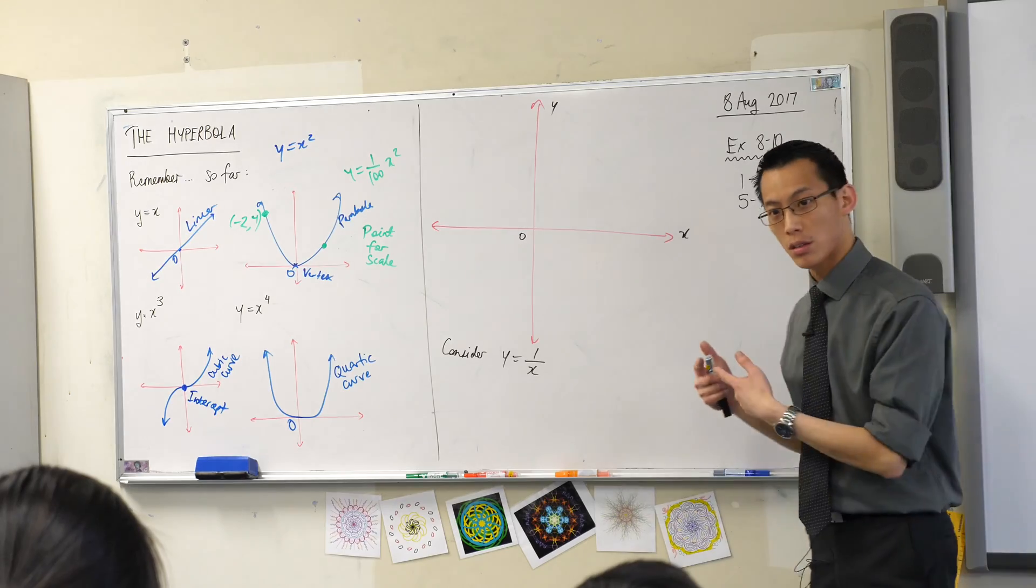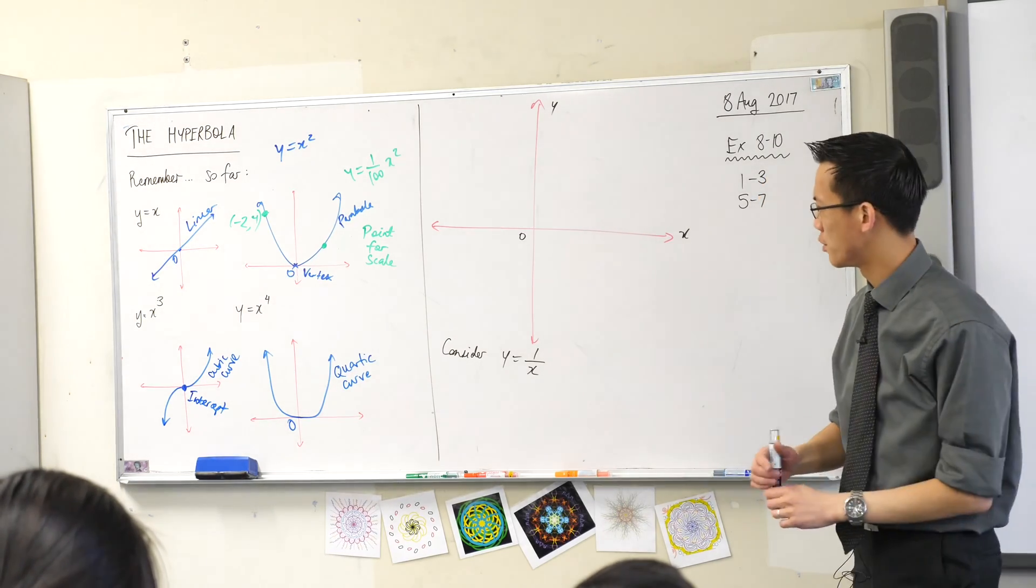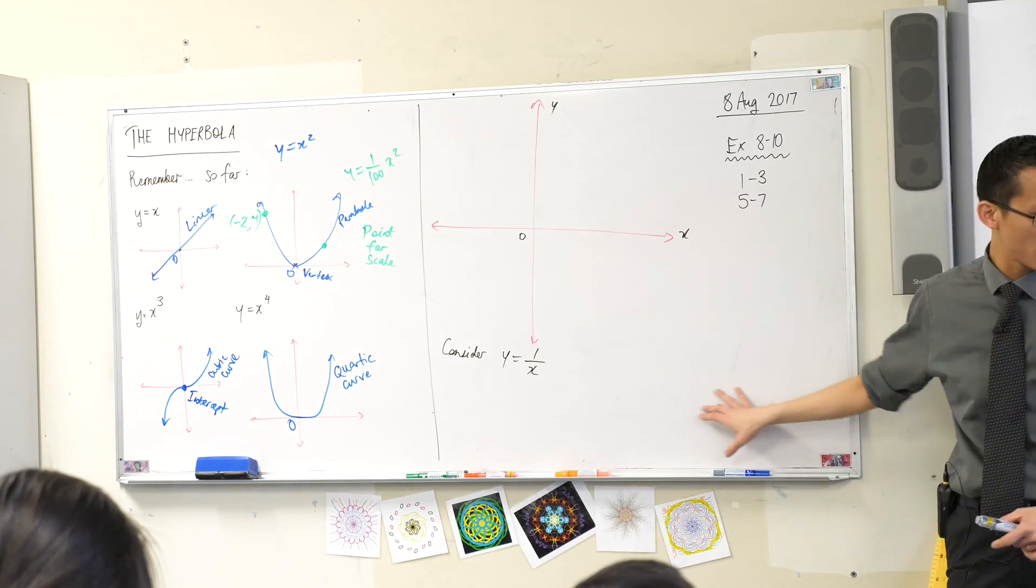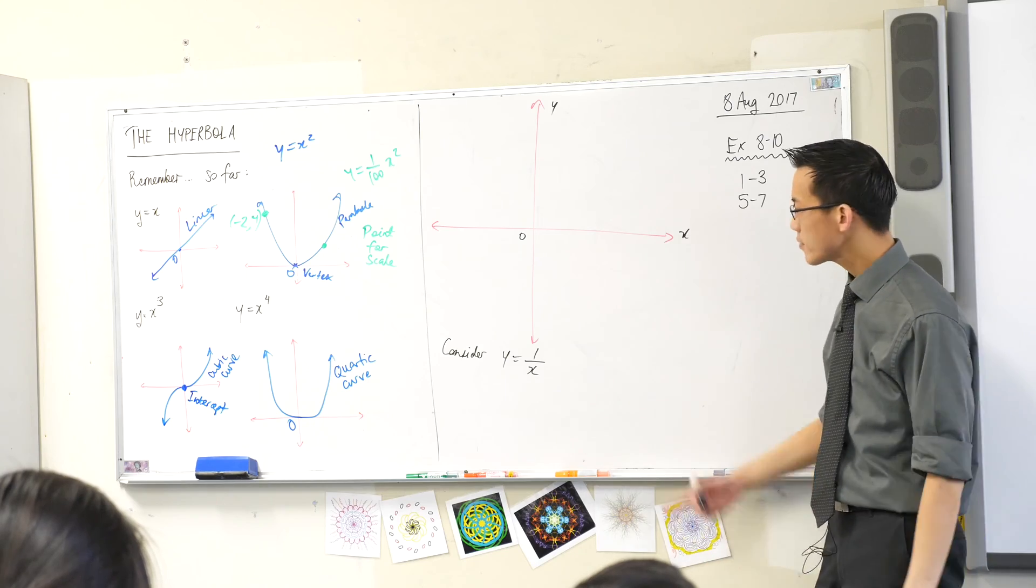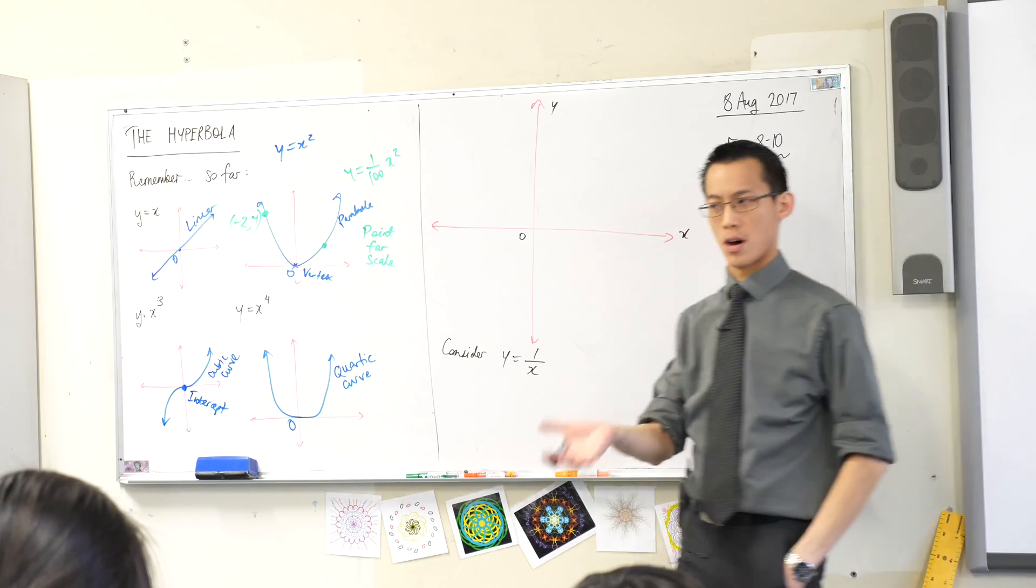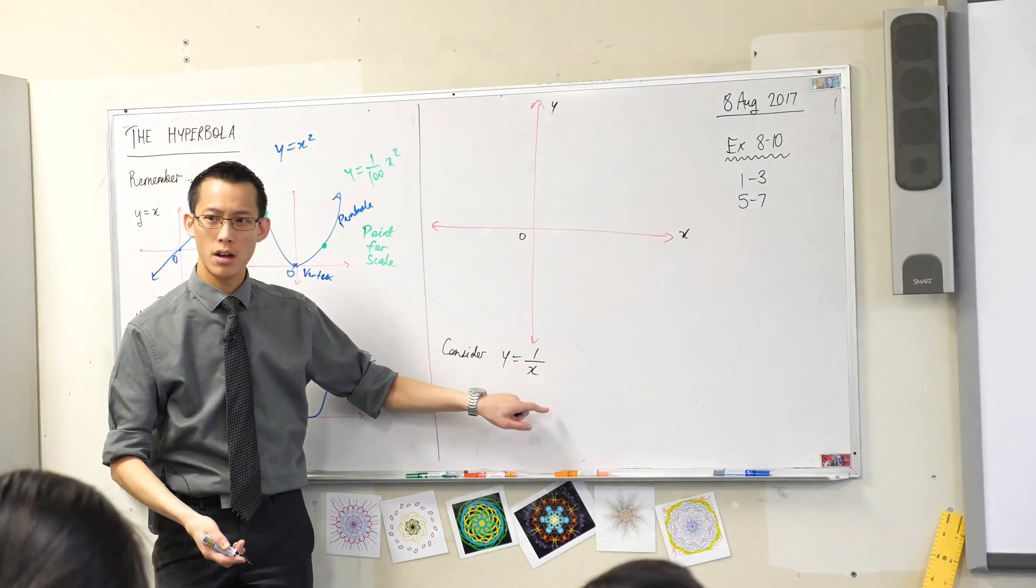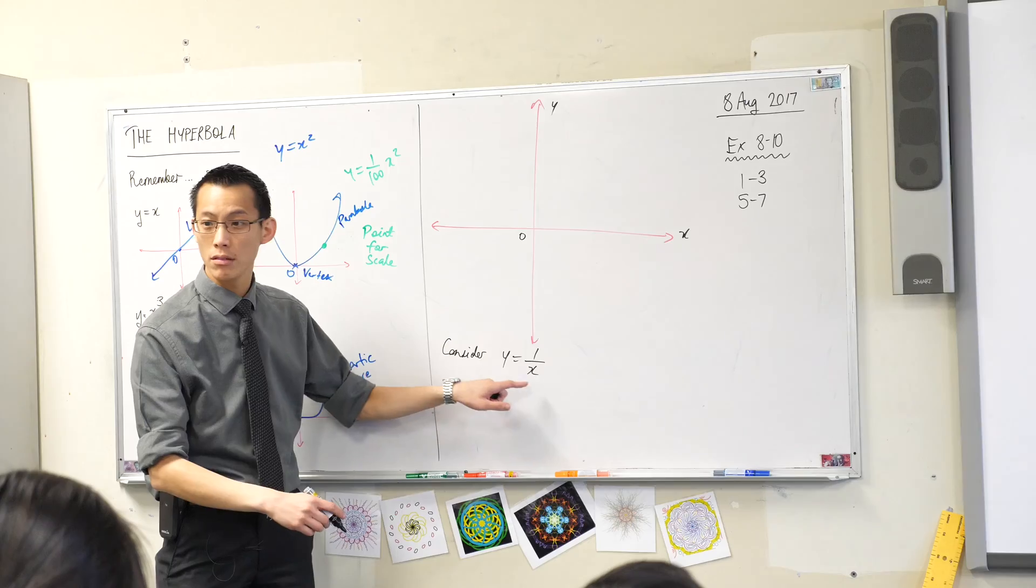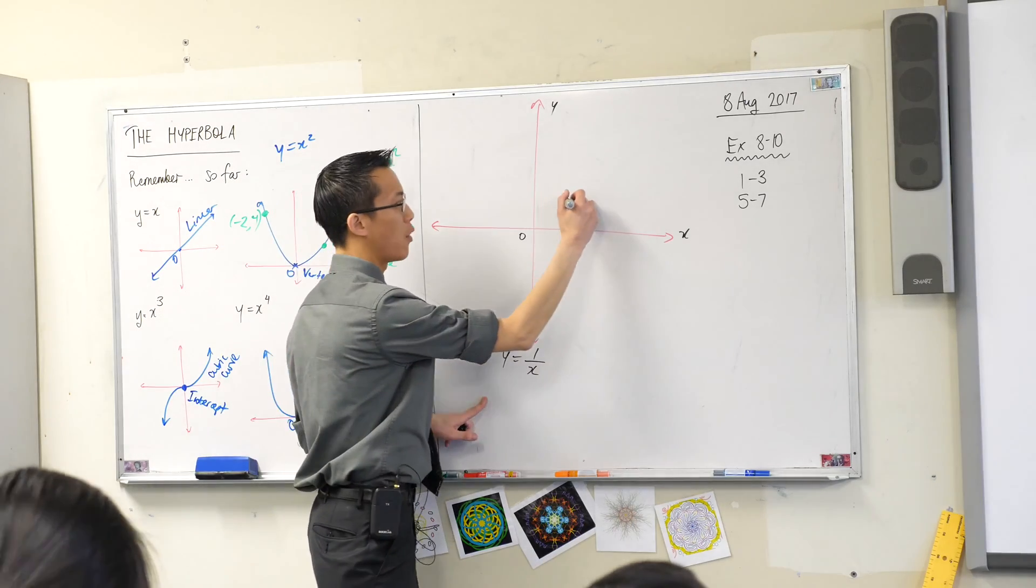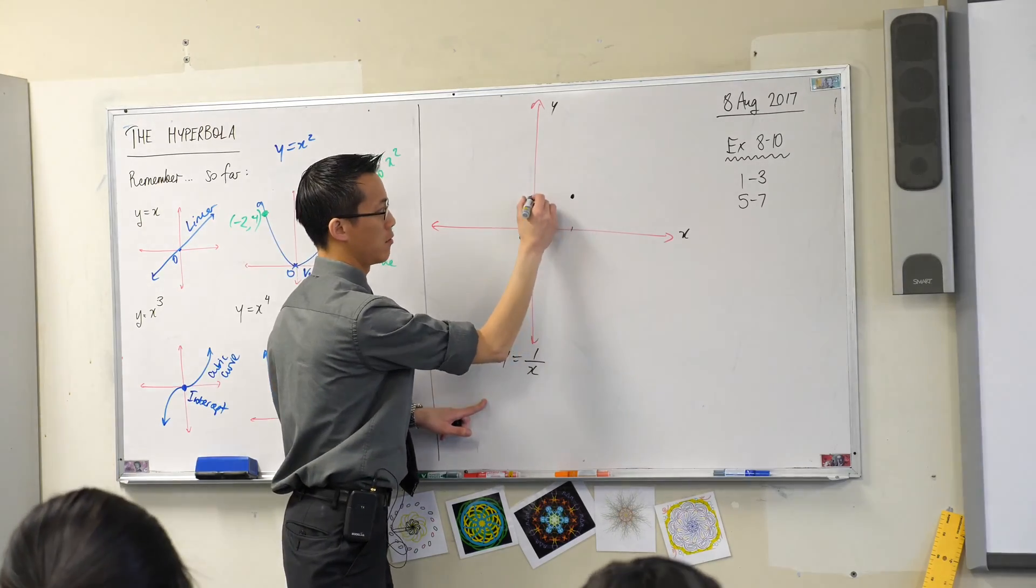So what does this look like? I could ask you to draw up a table of values, but I wonder if you can just help me plot some points directly. For instance, if x is equal to 1, then y would be equal to 1 over 1, which is 1. So let's put that point on our coordinate axis - I'm going to call that (1, 1).